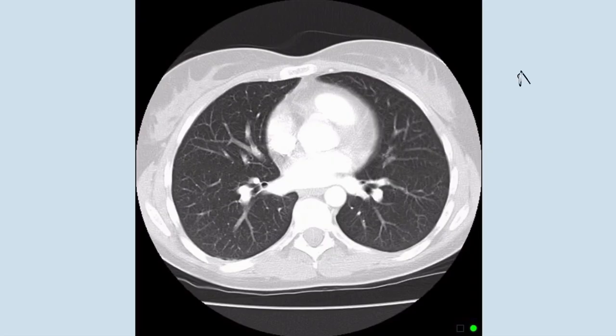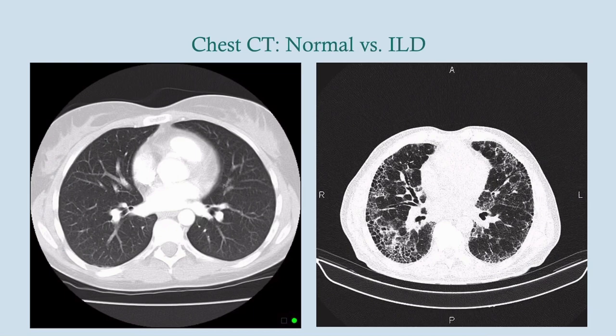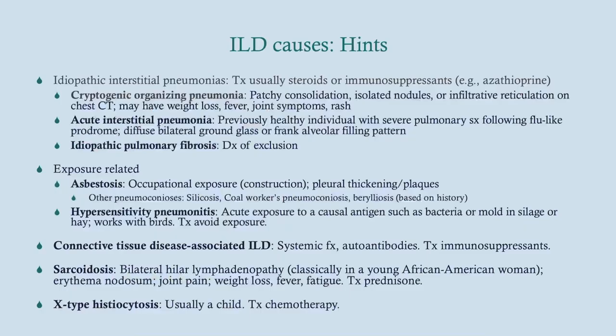On a normal chest CT you can clearly see the small bronchi — it looks just like a tree. Compare that to honeycombing, which is typical to see with pulmonary fibrosis. There are a massive number of causes for interstitial lung disease, which you can break down into a couple of categories.